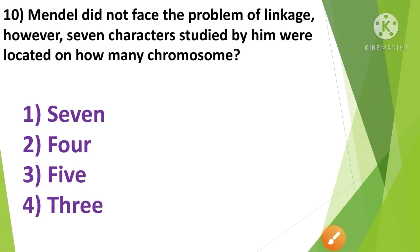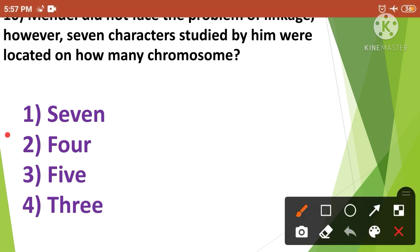Next question: Mendel did not face the problem of linkage. However, the seven characters studied by him were located on how many chromosomes? 1st option seven, 2nd option four, 3rd option five, and 4th option three. The correct answer is option 2nd — four chromosomes.